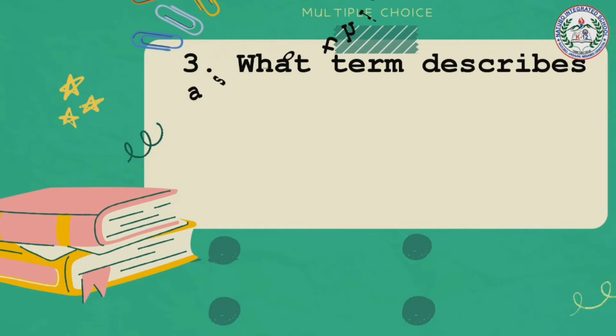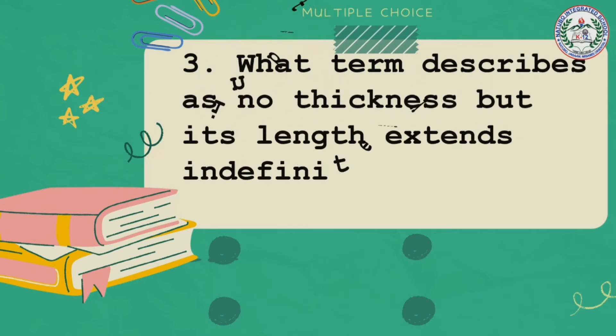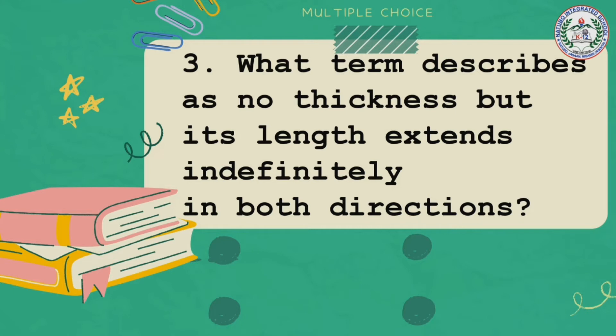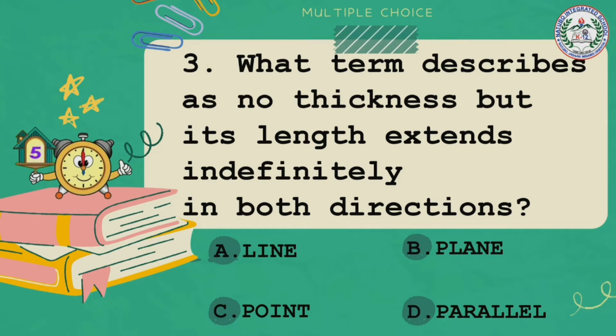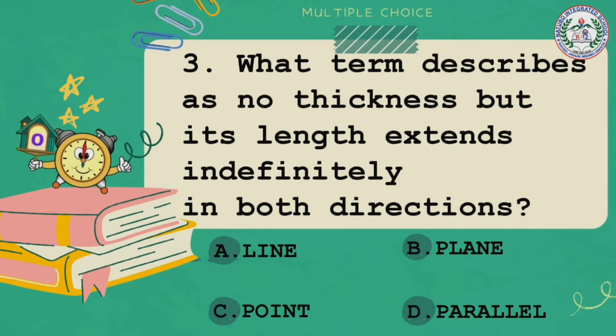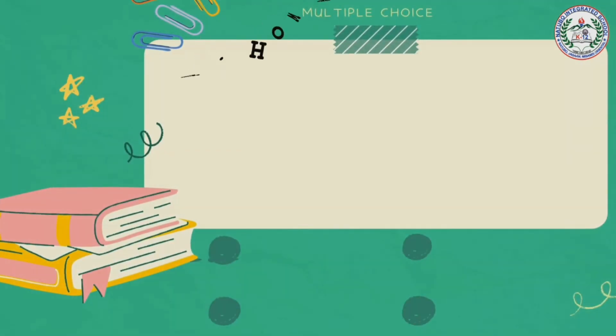And the answer is point. Number three, what term describes has no thickness but its length extends indefinitely in both directions? Is it A line, B plane, C point, or D parallel? Your timer starts now.